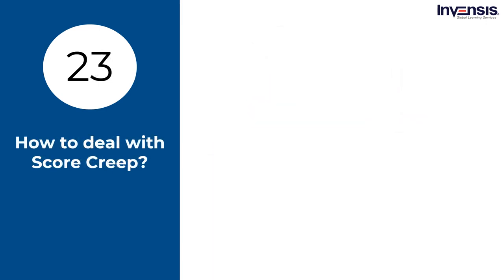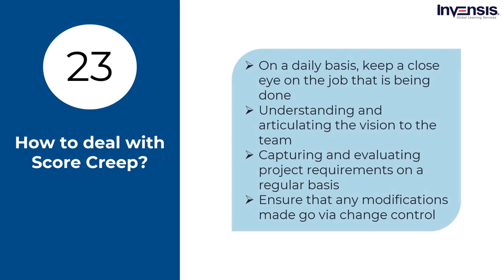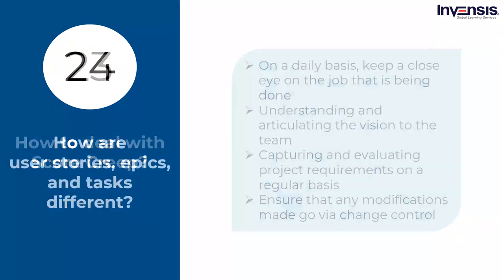How to deal with scope creep? Scope creep is when a modification is made without assessing its influence on scope, time, cost, and other factors. To deal with scope creep, you need to regularly monitor the tasks being done, understand and communicate the vision to the team ensuring everyone is on the same page, note and evaluate project requirements regularly with what is to be delivered to remind the team and client of the signed-off requirements, and ensure that any modifications go through change control and are implemented based on change request approval.